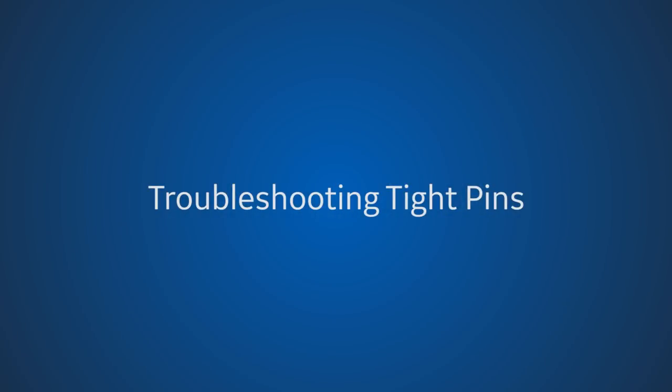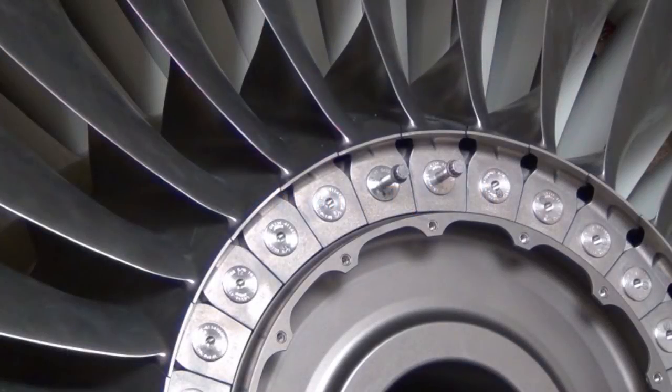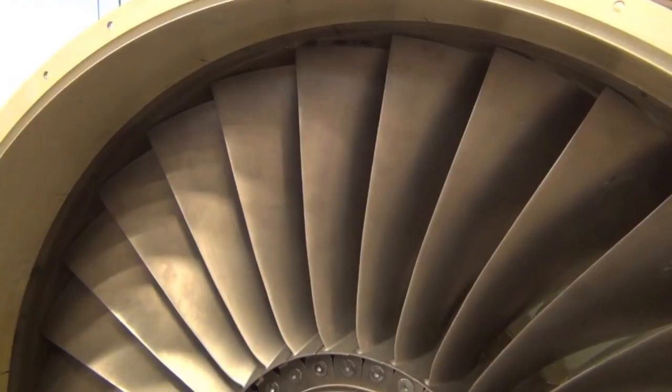When installing fan blades and pins, it is critical that the pins rotate freely in the joint. Pins that are too tight indicate a joint that will not allow free motion of the fan blades to a neutral position during operation. High N1 vibrations can occur due to the resulting out of balance. This video shows you how to check the pins for proper fit and how to troubleshoot pins that are too stiff.